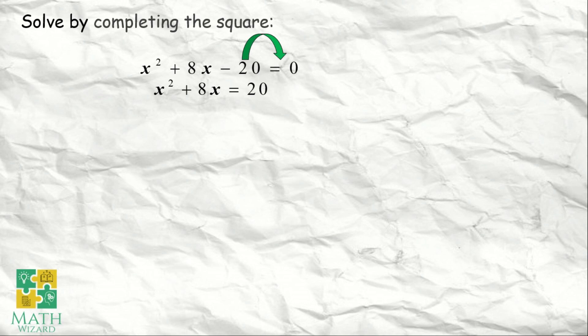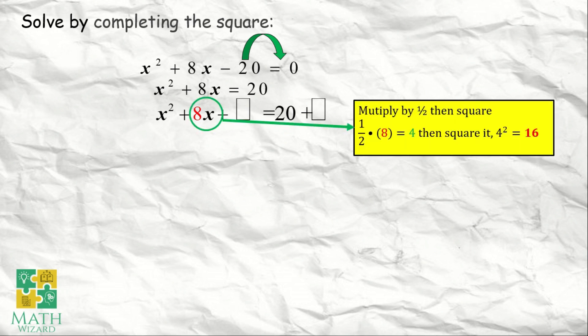Nagbabago yung sign kapag tinatranspose natin to other side of the equation ng isang number or variable. The next step is we need to identify what number should be added to both sides of the equation. Anong number ang ia-add natin sa both side ng equation? So, yung 8x — yung coefficient ng x — ang gagawin natin ay we need to multiply that by 1 half, and then we square it.